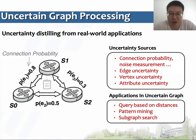To represent uncertain information, the existence of a connection is formulated as a probability edge and assigned with an uncertainty value. The uncertainty of vertex attributes also incorporates uncertain sources. In the literature of uncertain graphs, recent work mostly focuses on algorithm optimization and application design, such as query based on distance, graph pattern mining, and subgraph search.